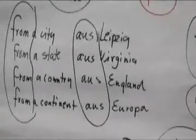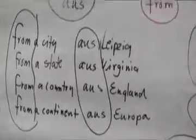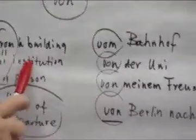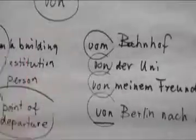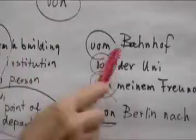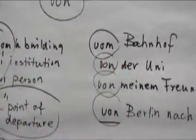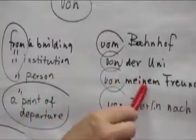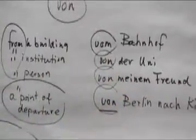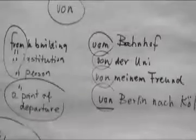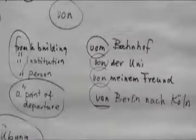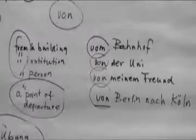However, when you're coming from a building, you would say vom Bahnhof — from the train station. If you're coming from an institution like a university, you would say ich komme von der Uni. If you're coming from a person's house, you say von meinem Freund. And if you're talking about a point of departure, where you leave at a city and continue on to another city, you also say von.